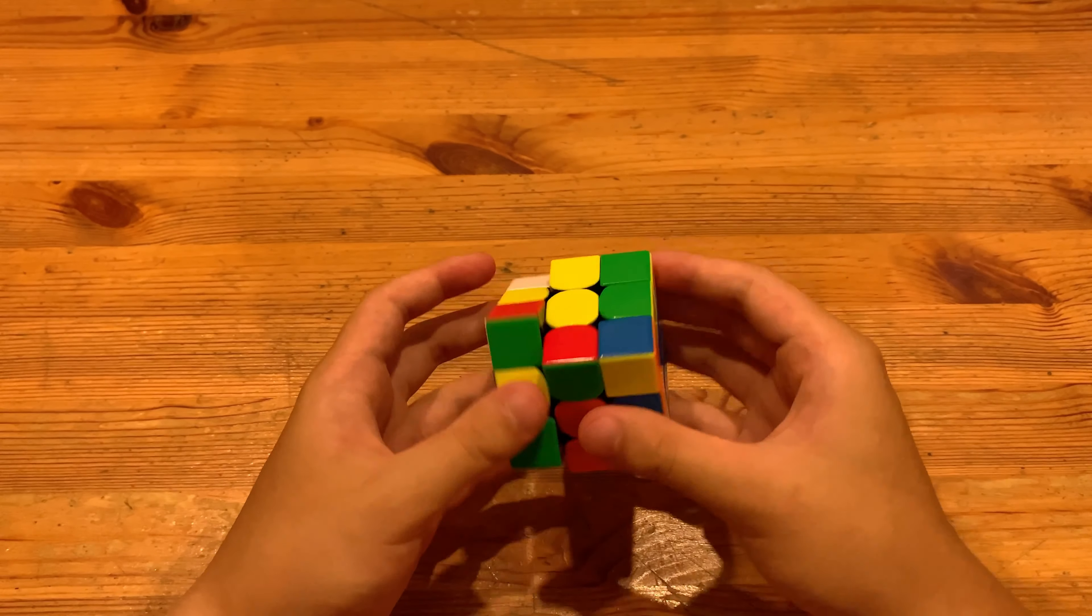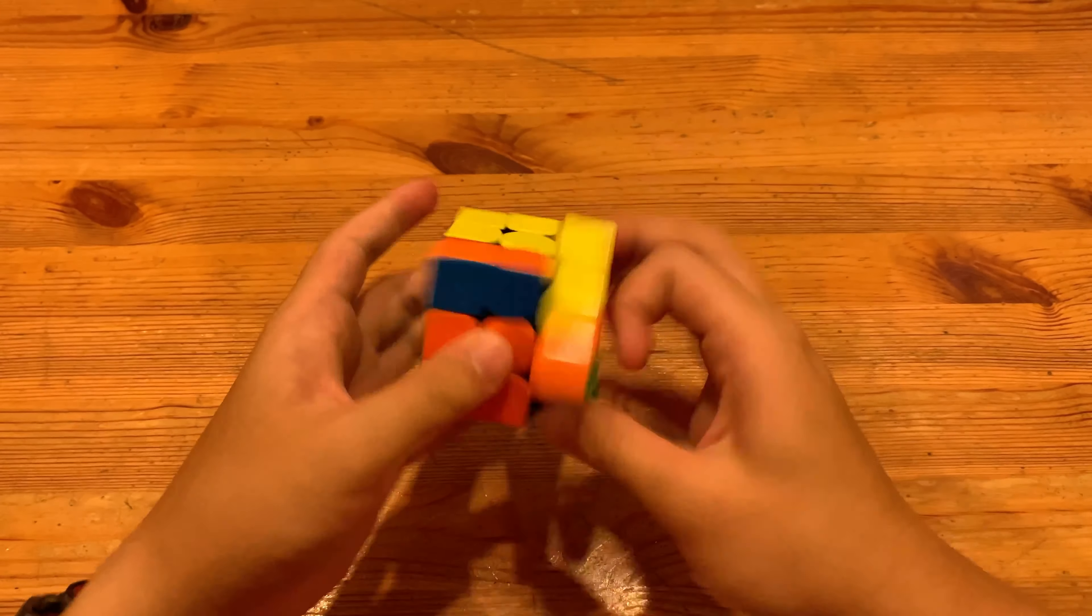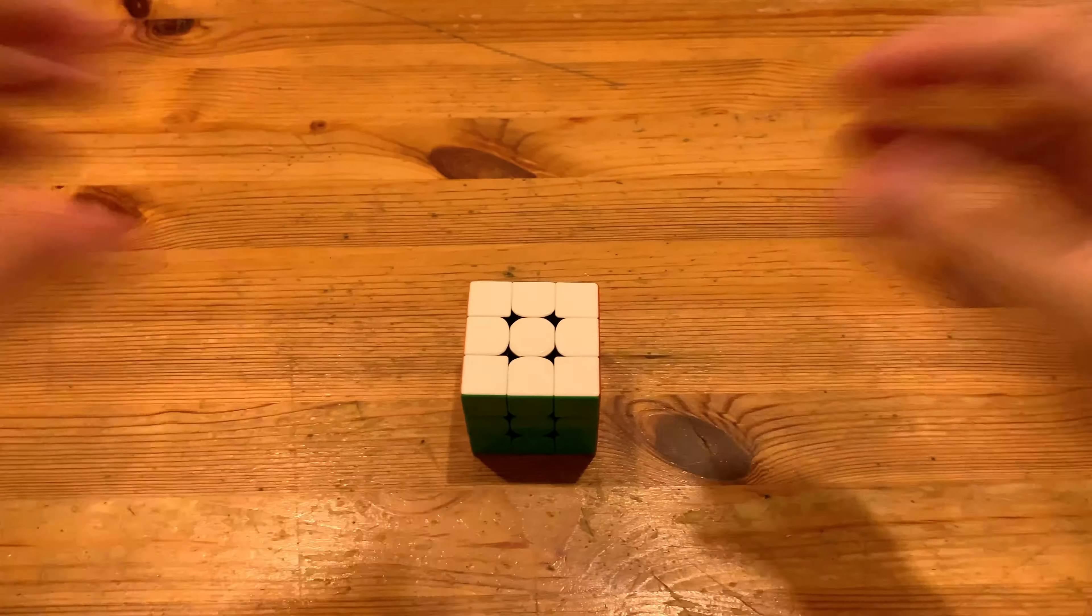And then solve this F2L pair. Could have done winter variation but didn't, and then J perm. So yeah, thanks for watching.